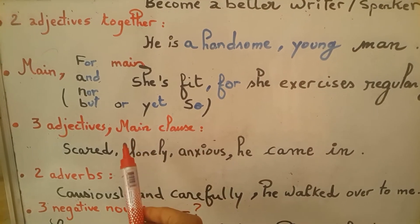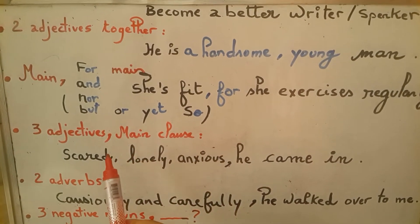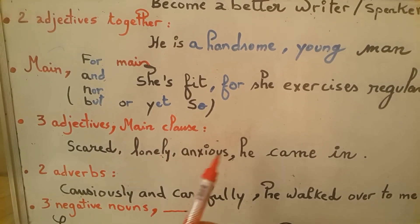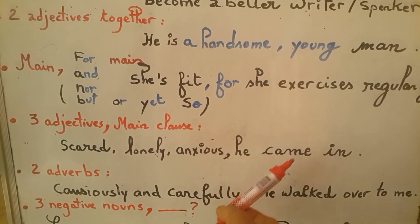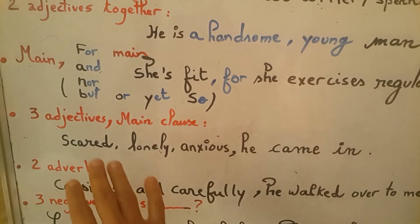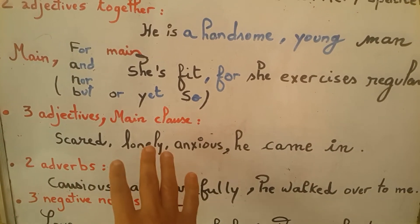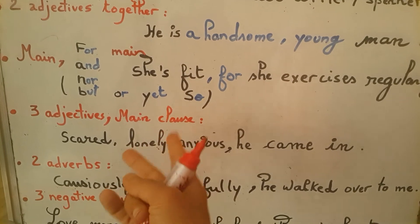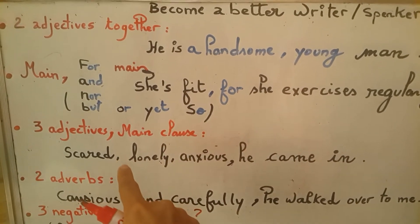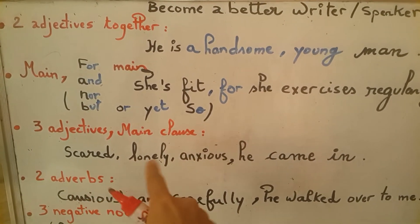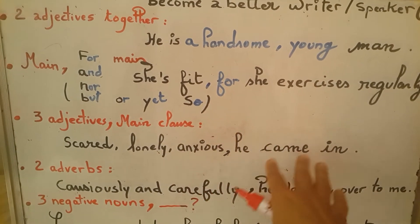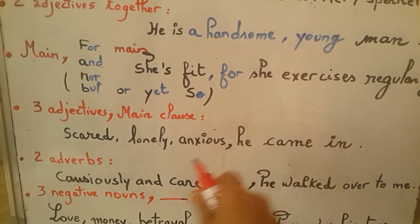I also find it very interesting to use three adjectives before a main clause, as in this example: 'scared, lonely, anxious, he came in.' Because we have a list of adjectives that are interchangeable, you do need to put a comma between them, and then you move on to the main clause.